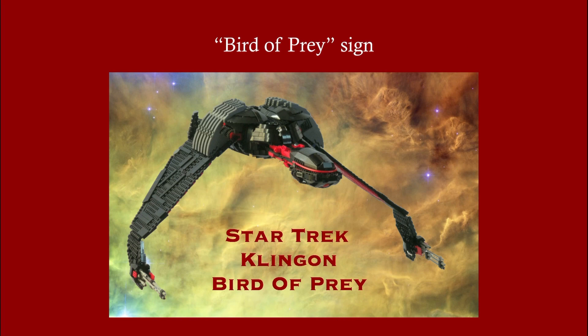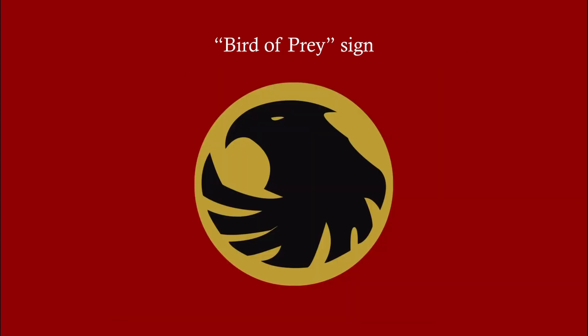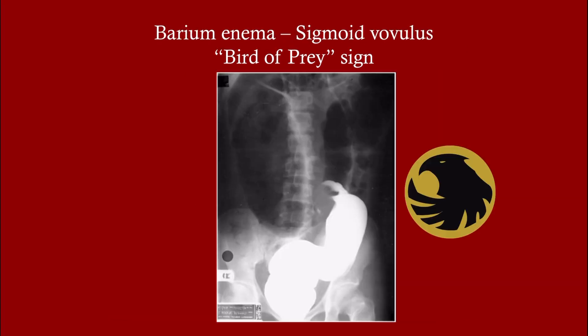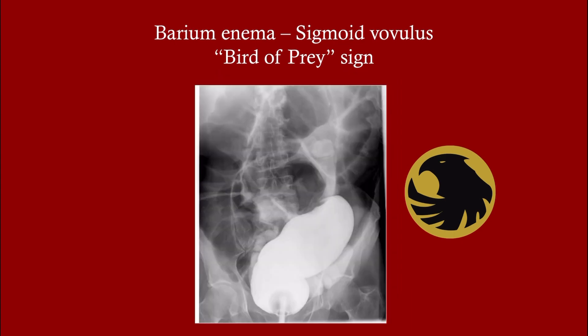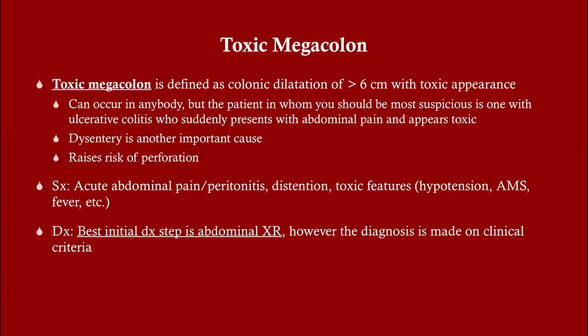There is also the bird of prey sign: if you were to do a contrast enema, you would see a bird-of-prey appearance at the site of torsion, with a visible beak-like narrowing.